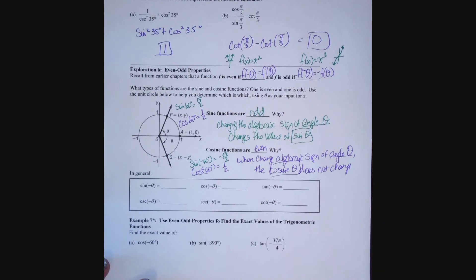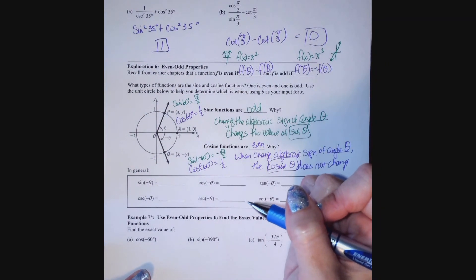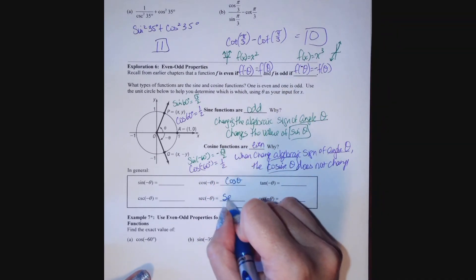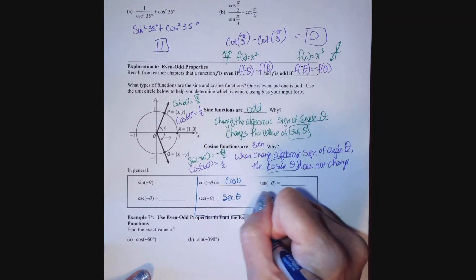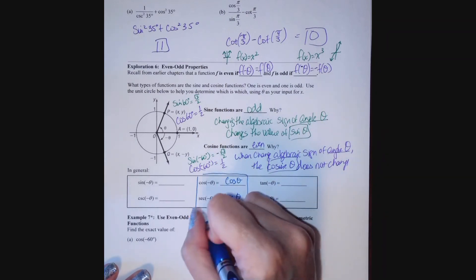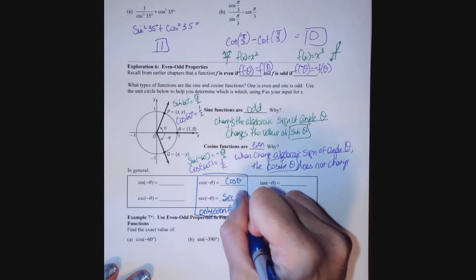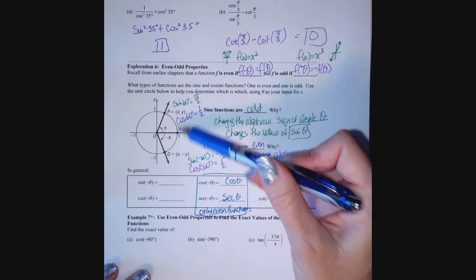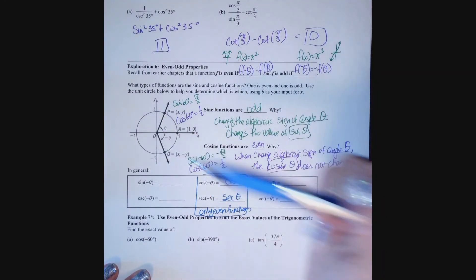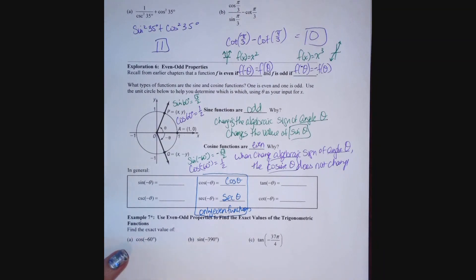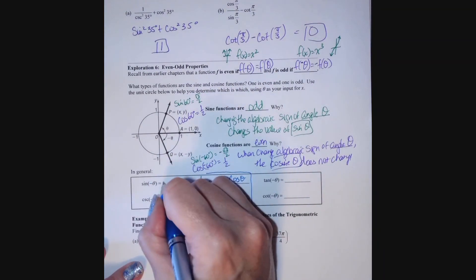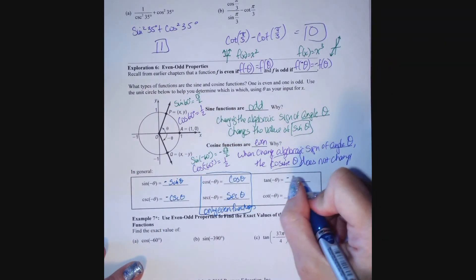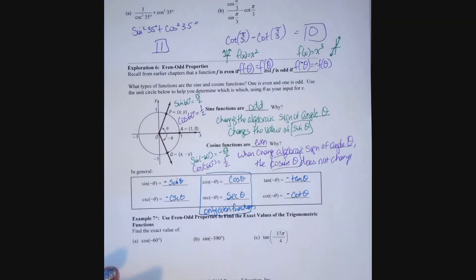In general, only cosine and its reciprocal secant are even functions, because they depend on x, not y — x is positive in quadrants 1 and 4 and negative in quadrants 2 and 3. The other four functions — sine, cosecant, tangent, and cotangent — are all odd functions, meaning f(negative theta) equals negative f(theta).